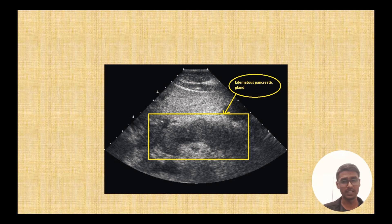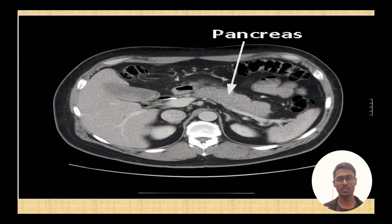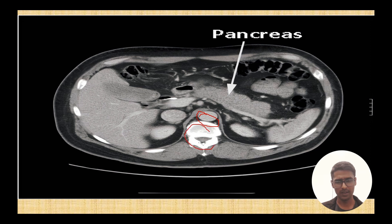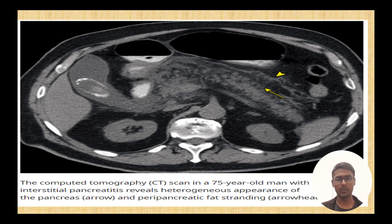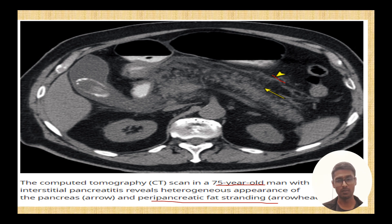On ultrasound in acute pancreatitis, you can see edema — it is edematous and you cannot see any demarcated lines between the body, head, and duct. On a normal CT scan you can see a completely normal pancreas with no edema, and you can delineate everything clearly. In a CT of acute pancreatitis in, for example, a 75-year-old patient, you can see the arrowhead sign — peripancreatic fat and heterogeneity in the pancreas. Normally the pancreas is clearly delineated, but in pancreatitis you see fat stranding and heterogeneous material.